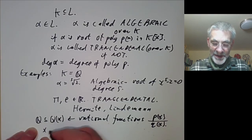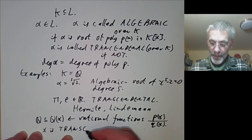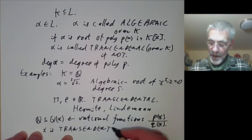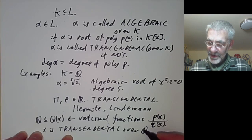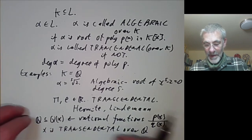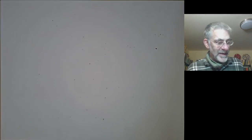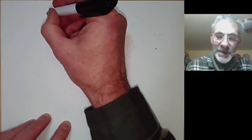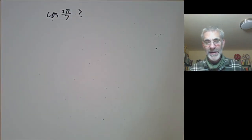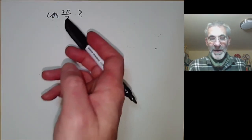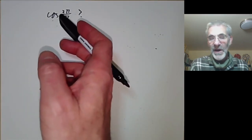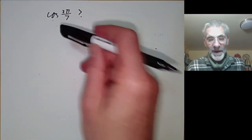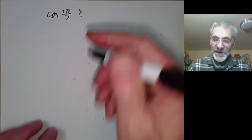You notice that x is transcendental over the field of rational numbers. Here's an example of a number where it's not immediately obvious whether it's transcendental or algebraic: what about the number cos(2π/7)? Is this algebraic or transcendental? If you didn't know about it, you might guess it's transcendental because cosine is a very transcendental function and π is transcendental. But it's actually algebraic.